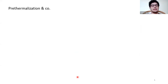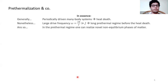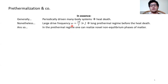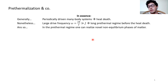Pre-thermalization concerns many-body systems under periodic drive. Such systems tend to reach the so-called infinite temperature state, a featureless state. Yet this fate can be evaded for a very long time when the drive frequency is very large. When the frequency is large, there can be a very long pre-thermal regime anticipating the heat death. The idea is that this pre-thermal regime can be used to realize novel non-equilibrium phases of matter with no equilibrium counterpart.